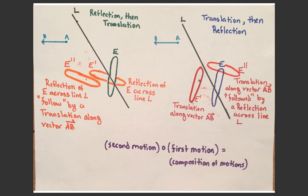On the left side of the screen, I have line L and our original image, this ellipse labeled E. The first thing I'm going to do is a reflection across this line to give us our first image E prime, and then I'm going to translate it along vector AB to give us our second image E double prime. We can see its location with respect to the original image.